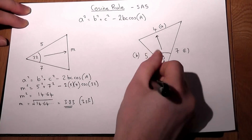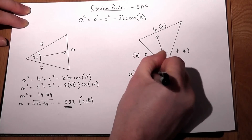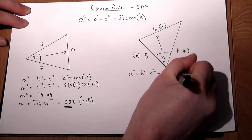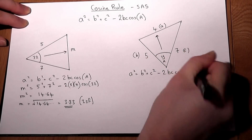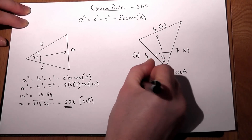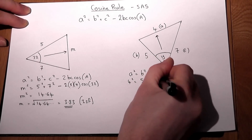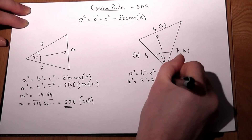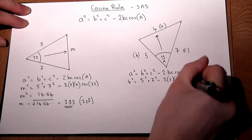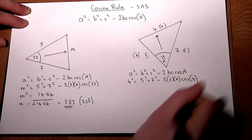For the formula A squared equals B squared plus C squared minus two BC cos of the angle, we have four squared equals five squared plus seven squared minus two times five times seven times cos of Y.